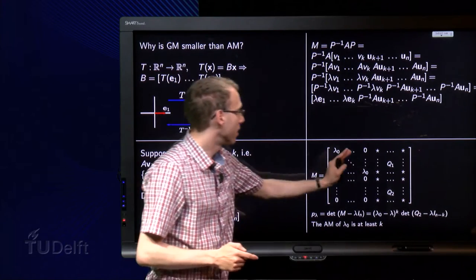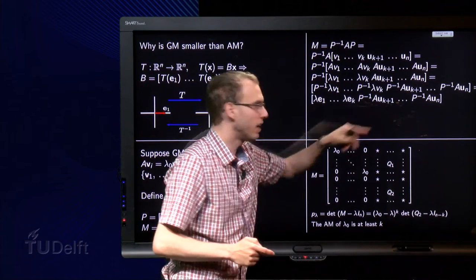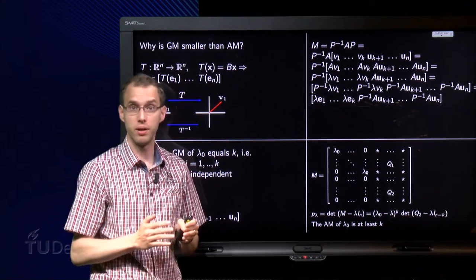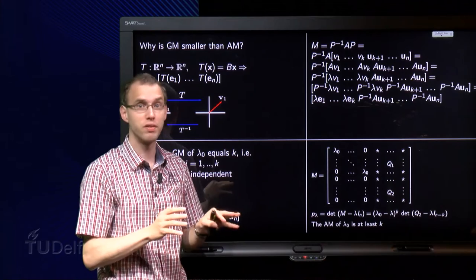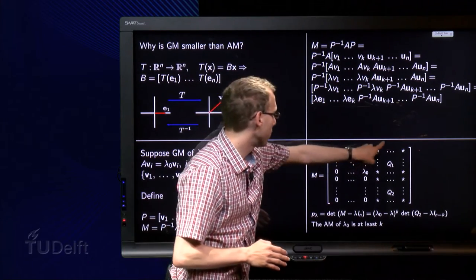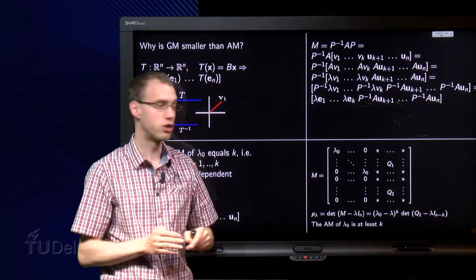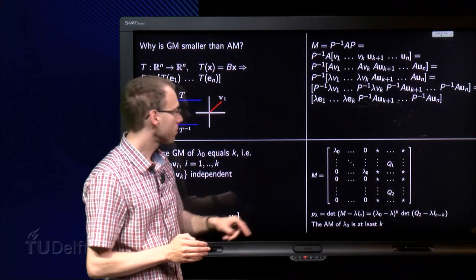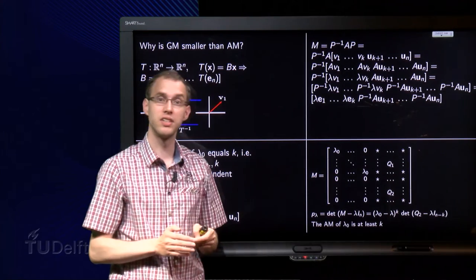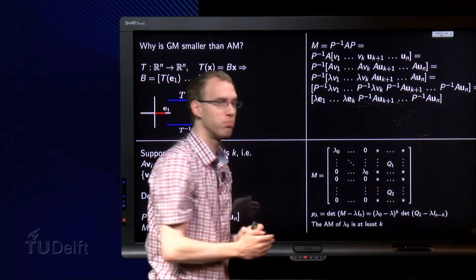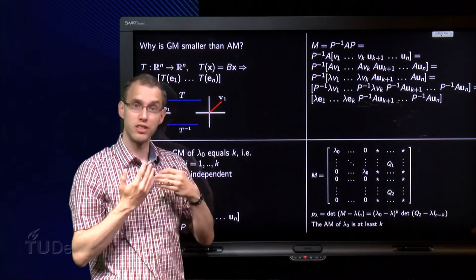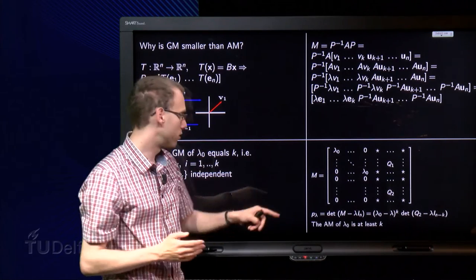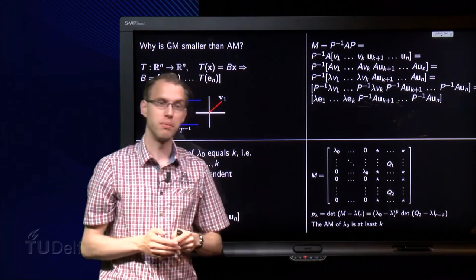And then the other part, the P inverse A times uk+1. That's some, there are all kinds of numbers over there. I don't know. It doesn't matter. I call this block over here matrix Q1. I call this block over here matrix Q2. So here we have our matrix M, which is nice on the first part. And then we can try to compute the eigenvalues of M. So we compute the determinant of M minus λ times In.